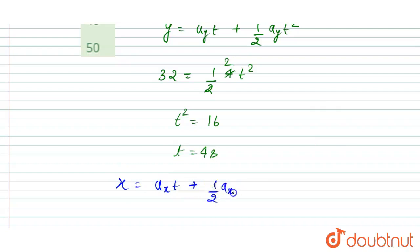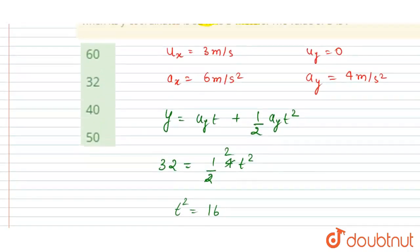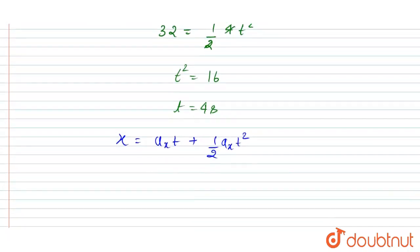So ax is given as 6 and ux is 3, so just put these values.